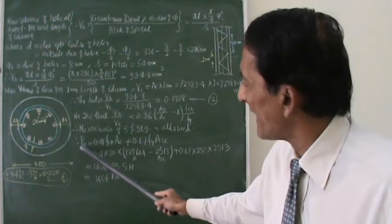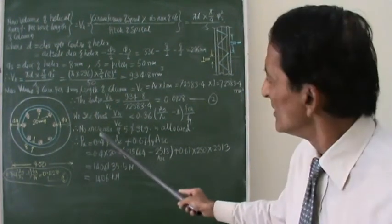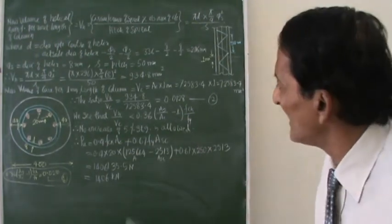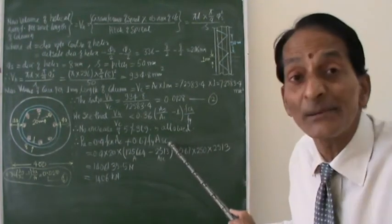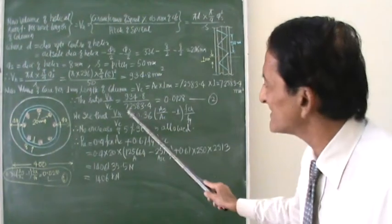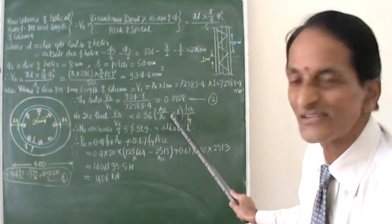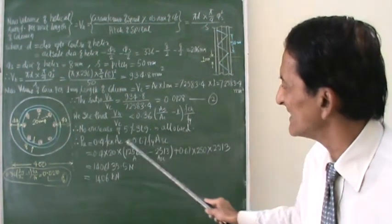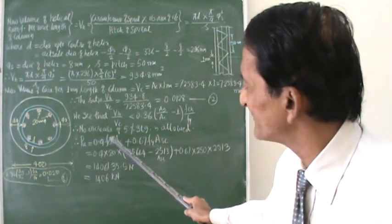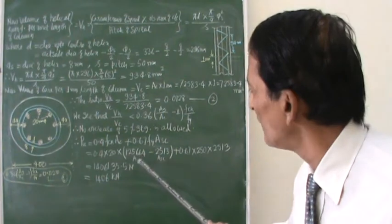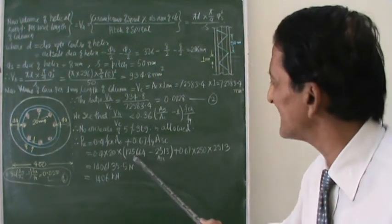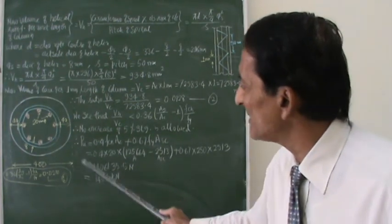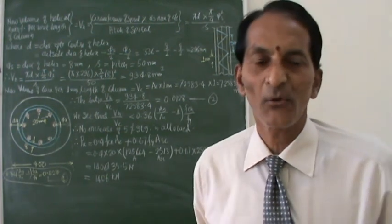If VH/VC is greater than the required quantity, the IS code says the ultimate strength has to be increased by 5%. Since VH/VC is less than the required quantity here, we need not increase the 5% strength. We directly use the standard equation: 0.4 × fck × Ac + 0.67 × fy × Asc. Substituting all known values gives an ultimate strength of 1406 kN.